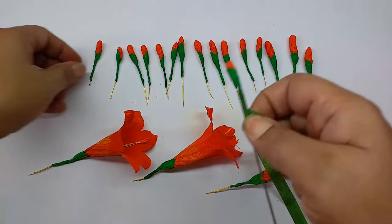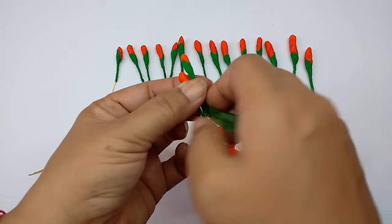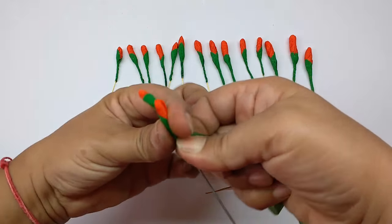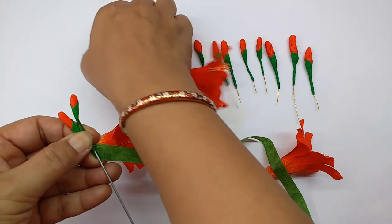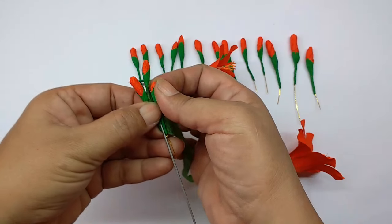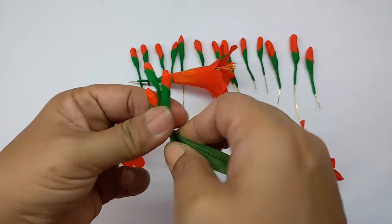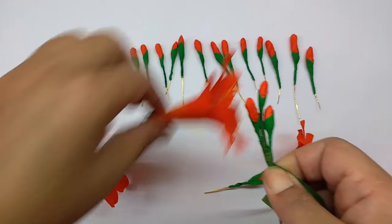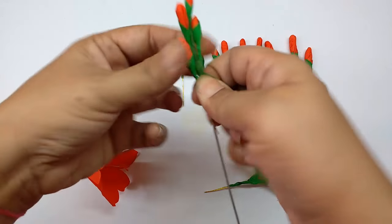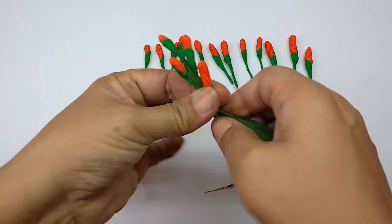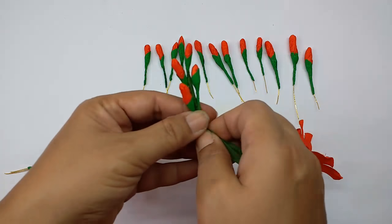After giving about three whirls, take the other bud, put it slightly lower on one side of the wire and then wind it. Then go on adding buds but they should be on just two sides of the wire, not all around it.